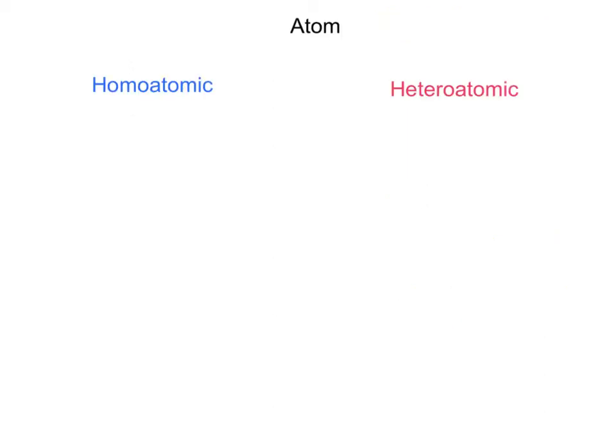The atom is the smallest thing you can divide a chemical substance into while still retaining the identity of that substance, compound, or element. If you get smaller than an atom, you don't have the identity of an element or compound. So it's the smallest you can subdivide and still get the properties for a compound or an element.